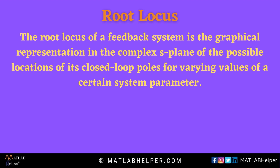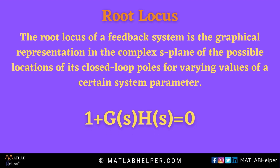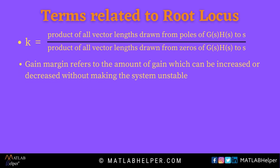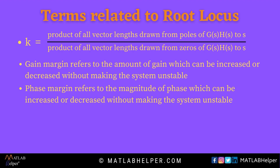The root locus of any control system has the characteristic equation 1 plus G(s)H(s) equals to 0. This is the value of k that is given at any point on the root locus. Gain margin refers to the amount of gain which can be increased or decreased without making the system unstable. Gain margin is directly proportional to stability and is usually expressed in decibels. Phase margin, similar to gain margin, can be increased or decreased without making the system unstable — it is basically the phase which we are referring to here.